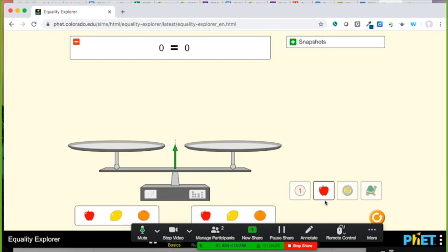That would be students working independently on their own so that when we come together, you could use Zoom and this remote control feature to have students actually sharing their equalities that they found and then asking questions of students in your class.